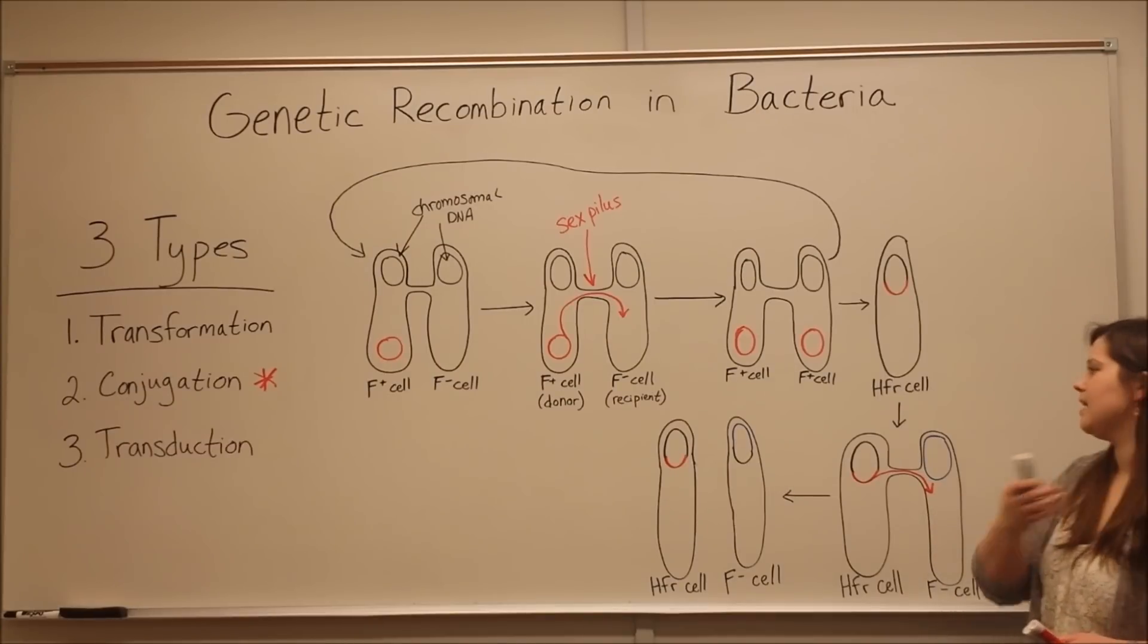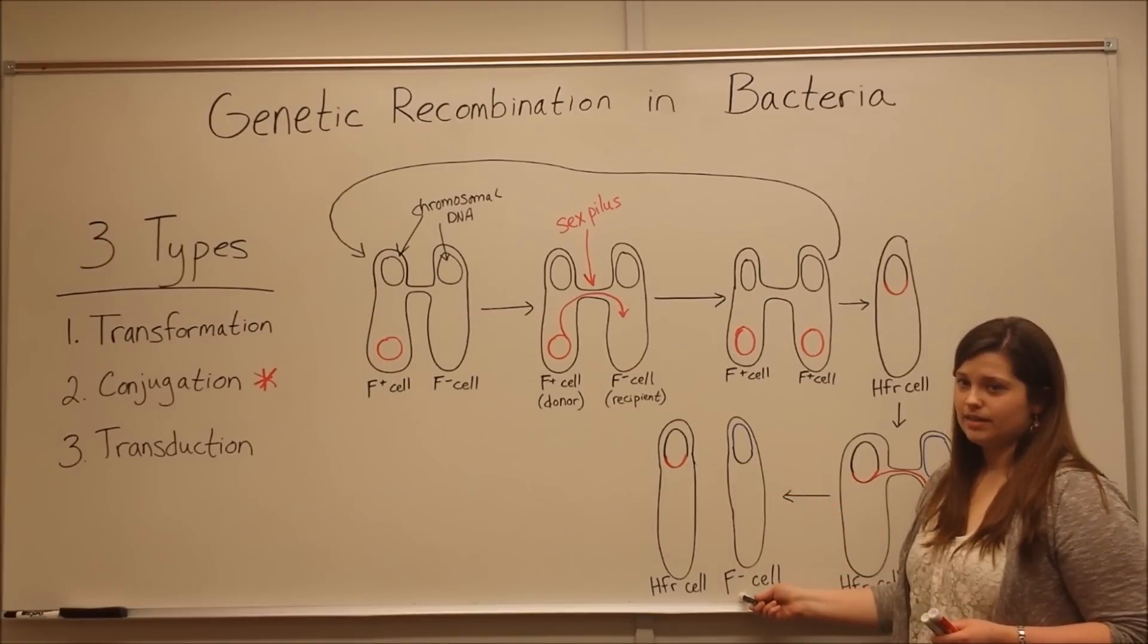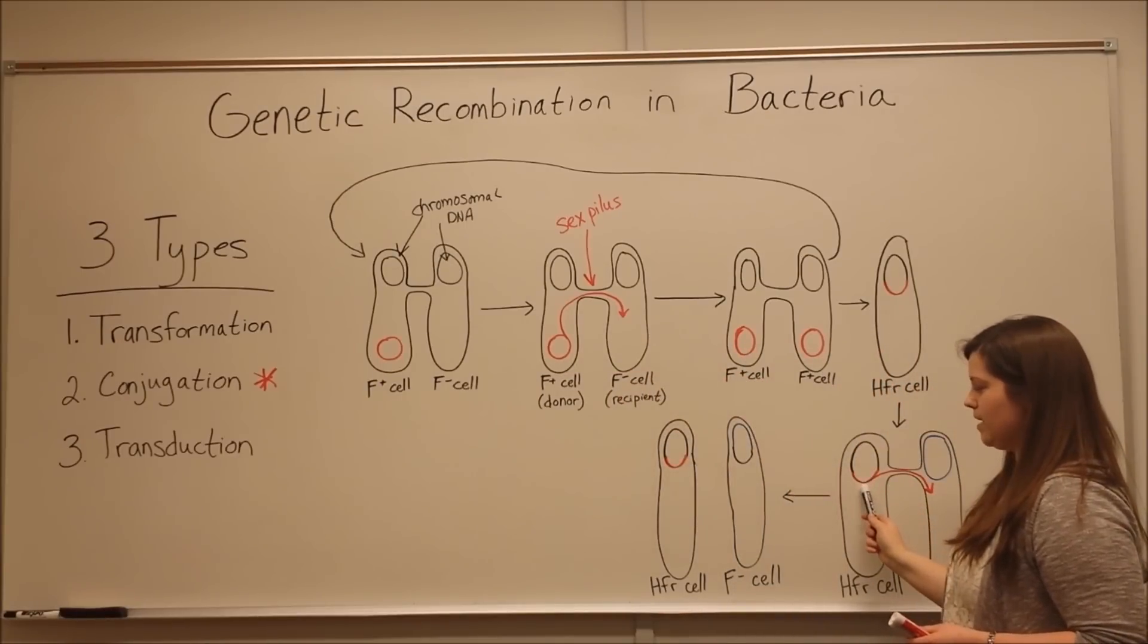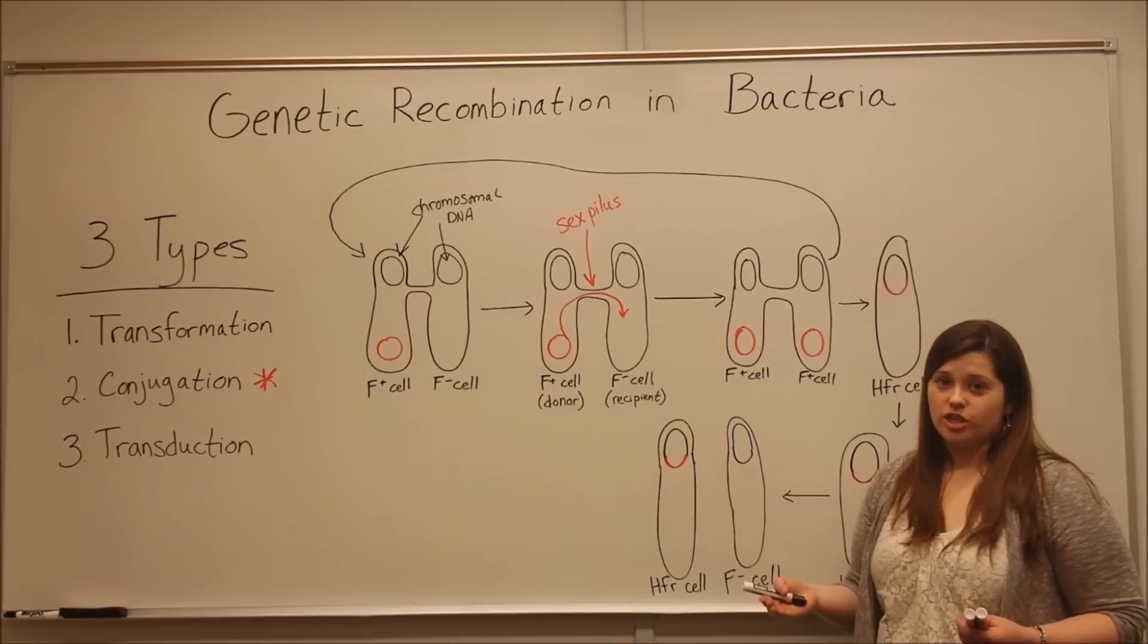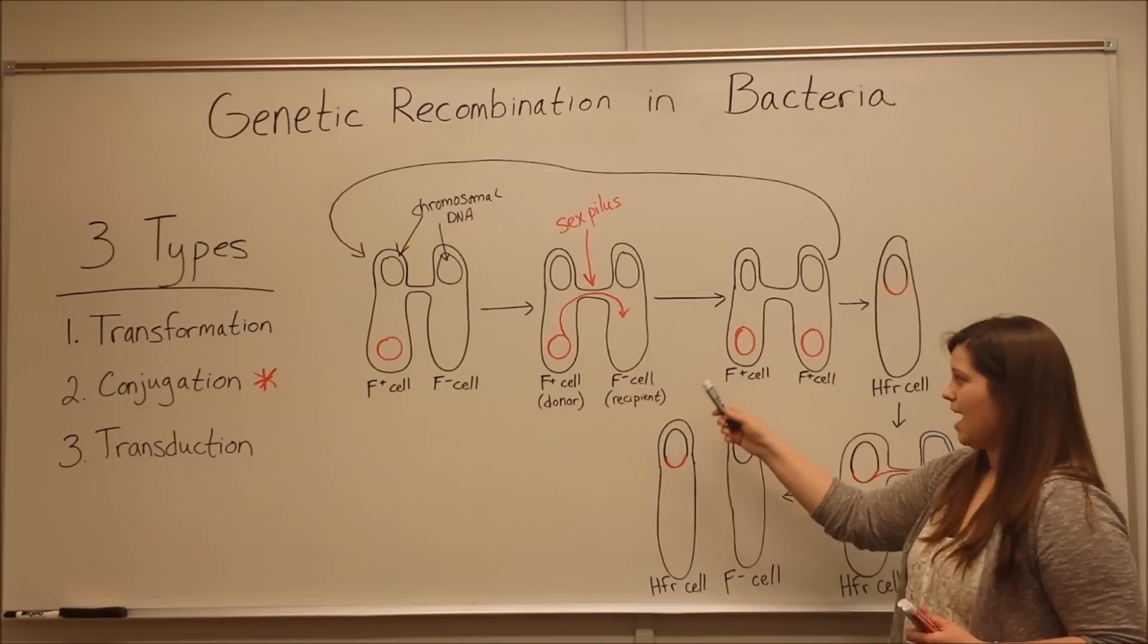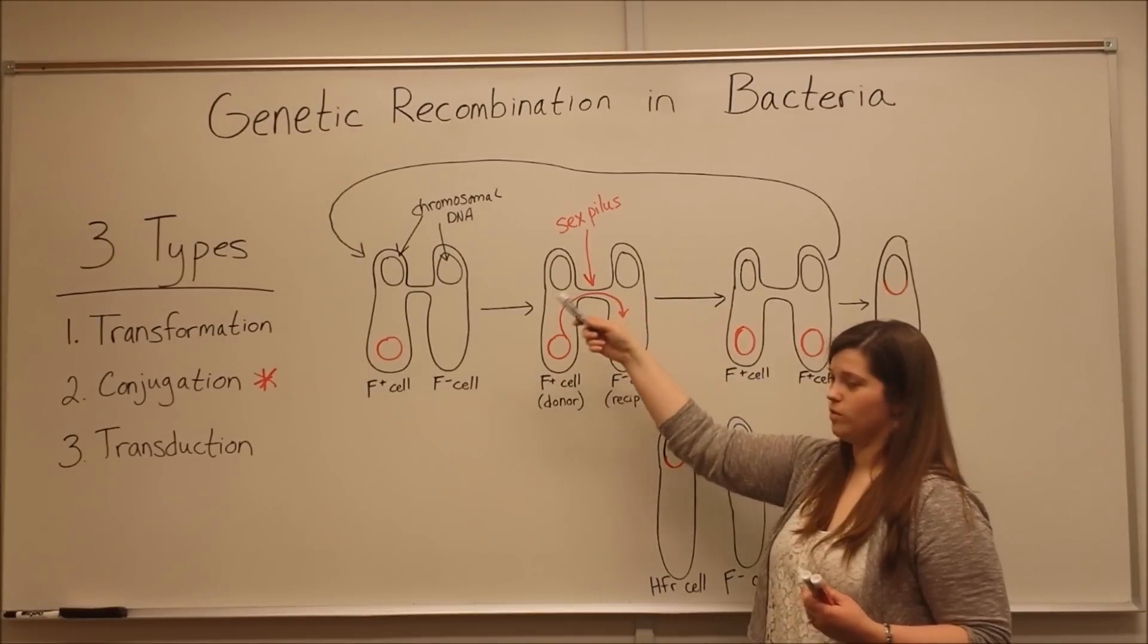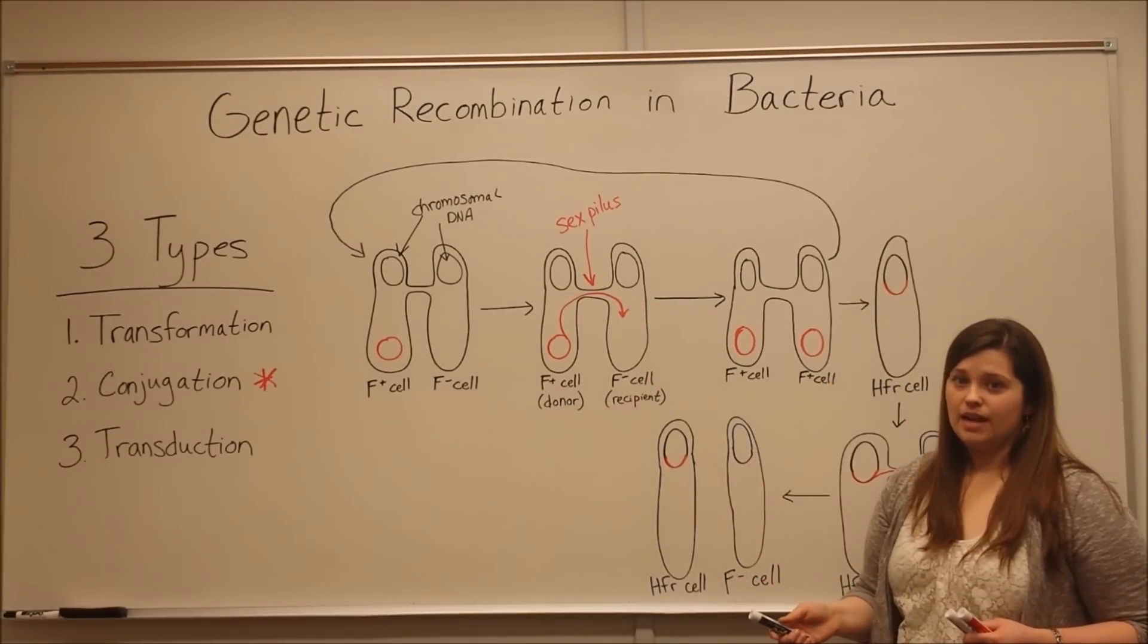What we get is a recombinant cell. It's still an F-minus cell without the fertility plasmid DNA. But it has acquired extra genes, meaning any extra DNA incorporated into the HFR cell's chromosome has now been integrated into this F-minus cell's chromosome.